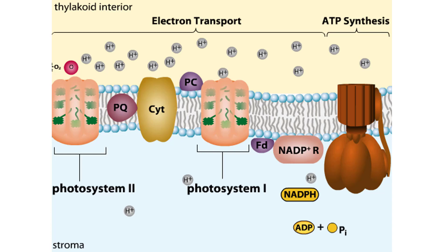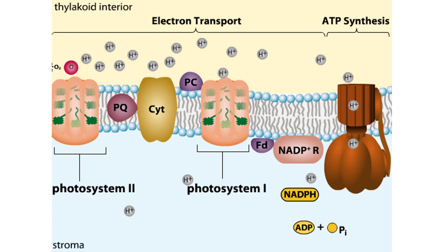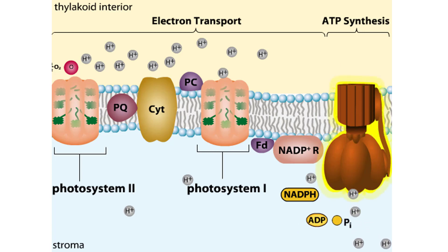During these light reactions, hydrogen ions accumulate in the thylakoid interior. These ions will have a tendency to move to regions of lower hydrogen concentration outside the thylakoid, moving by means of a pore in ATP synthase. This movement powers the production of ATP, which fuels later stages of photosynthesis.